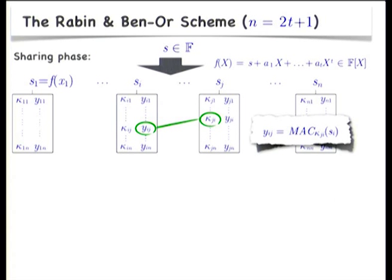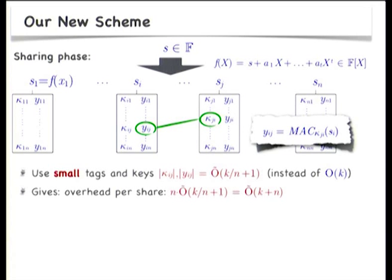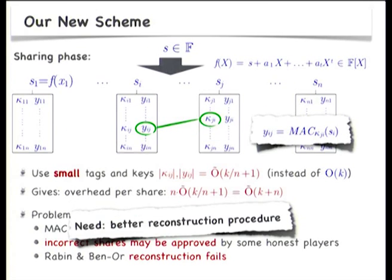Now I'm going to show you how our new scheme works. The sharing phase of our new scheme looks exactly the same as the sharing phase of the Rabin-Benor scheme. The only difference is that we use smaller keys and smaller tags — we reduce the size of the keys and tags essentially by a factor N, which immediately gives the claimed savings. Of course, reducing the sizes of the keys and tags weakens the security of the MAC. In this new scheme, incorrect shares may be approved by some honest players with reasonable probability, so the Rabin-Benor reconstruction fails. To overcome that, we need a new better reconstruction procedure that more carefully inspects the consistency graph describing which player approves which share.